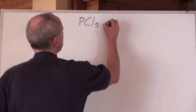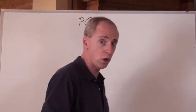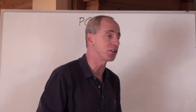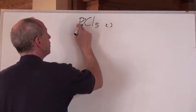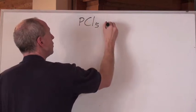When you count up the number of valence electrons for PCL5, which is a totally legitimate molecule in nature, 5 times group 7, that's 35, phosphorus is in group 5, so that's 40 in total.